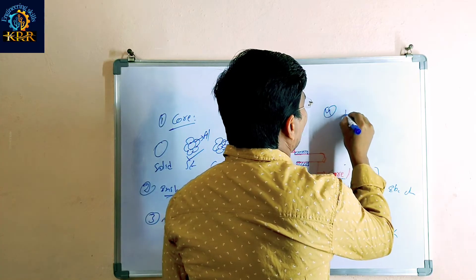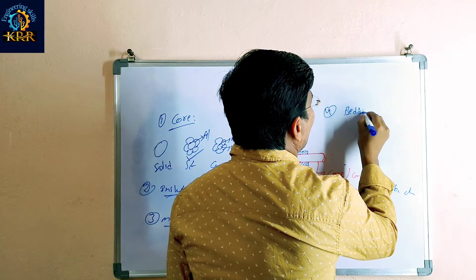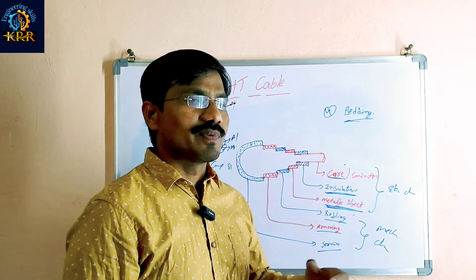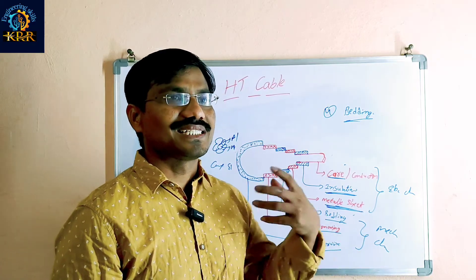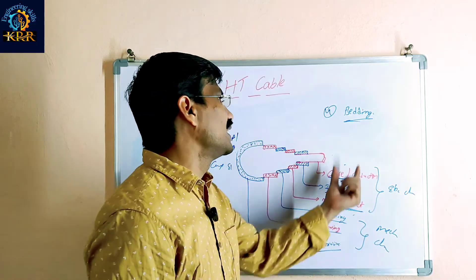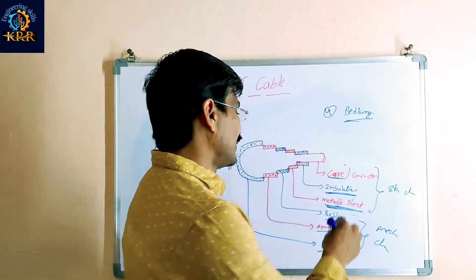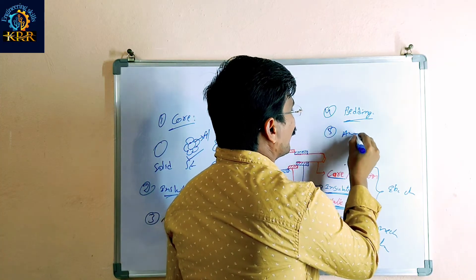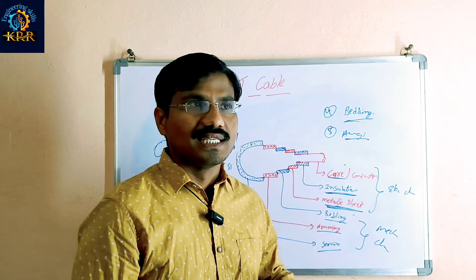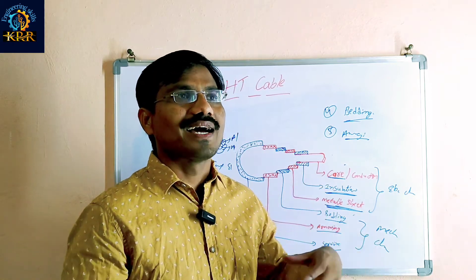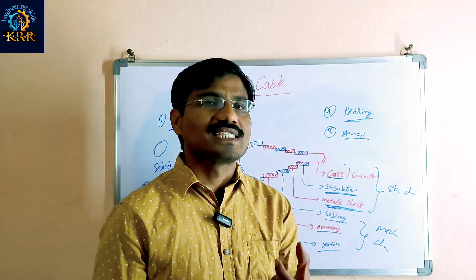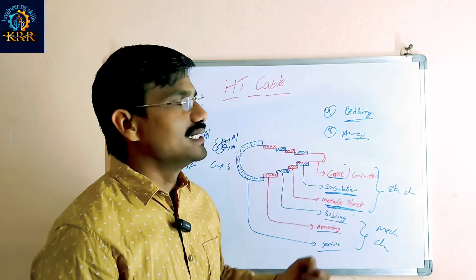The fourth one is the bedding. Bedding is used for protection against external mechanical stress. The fifth one is the armouring. The use of armouring is to protect against external mechanical damage.